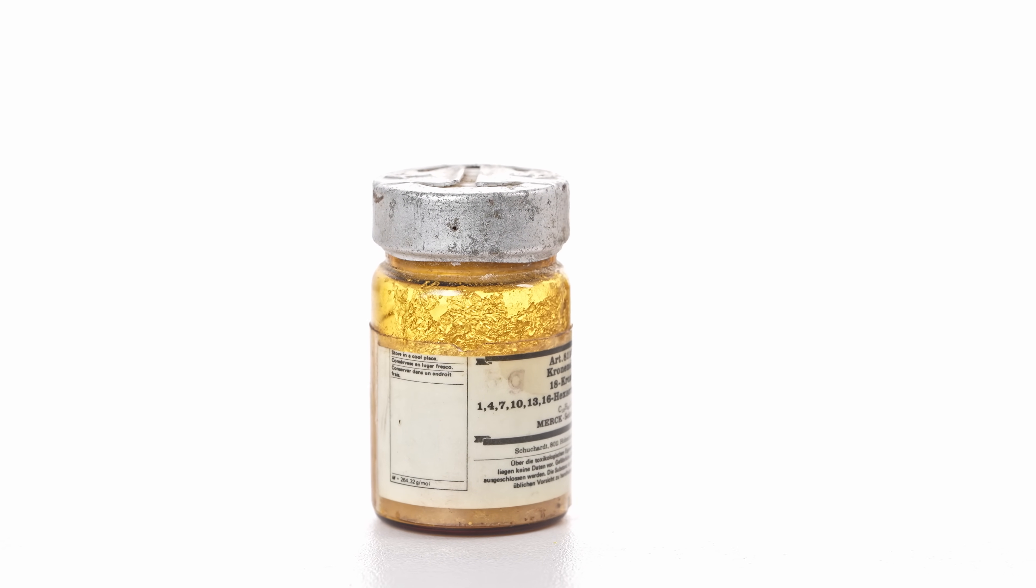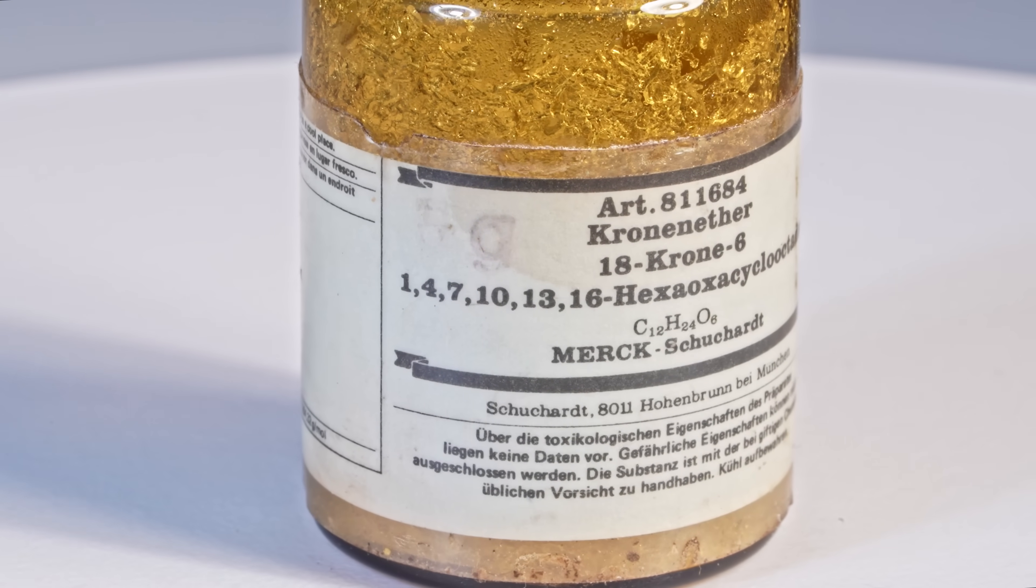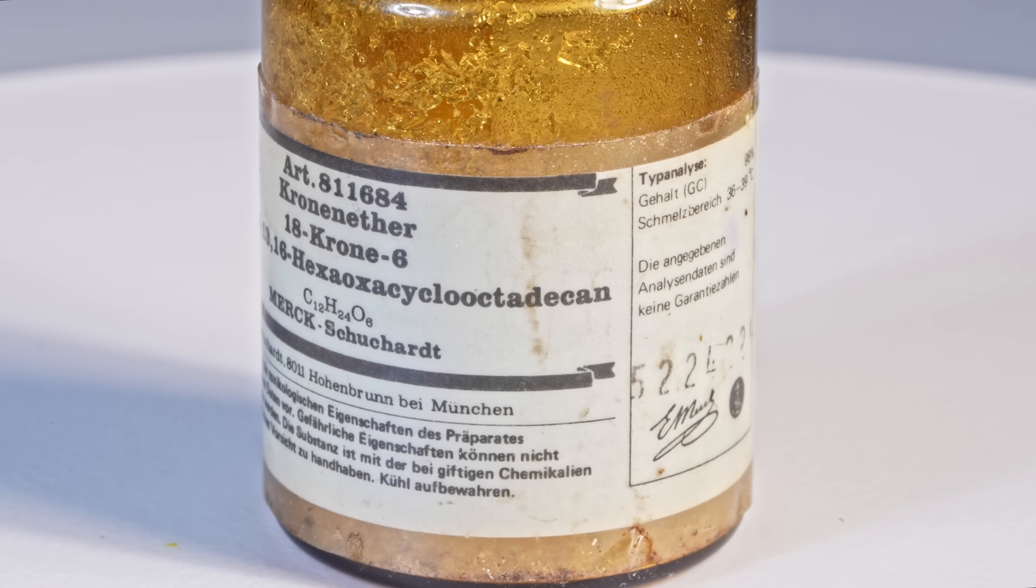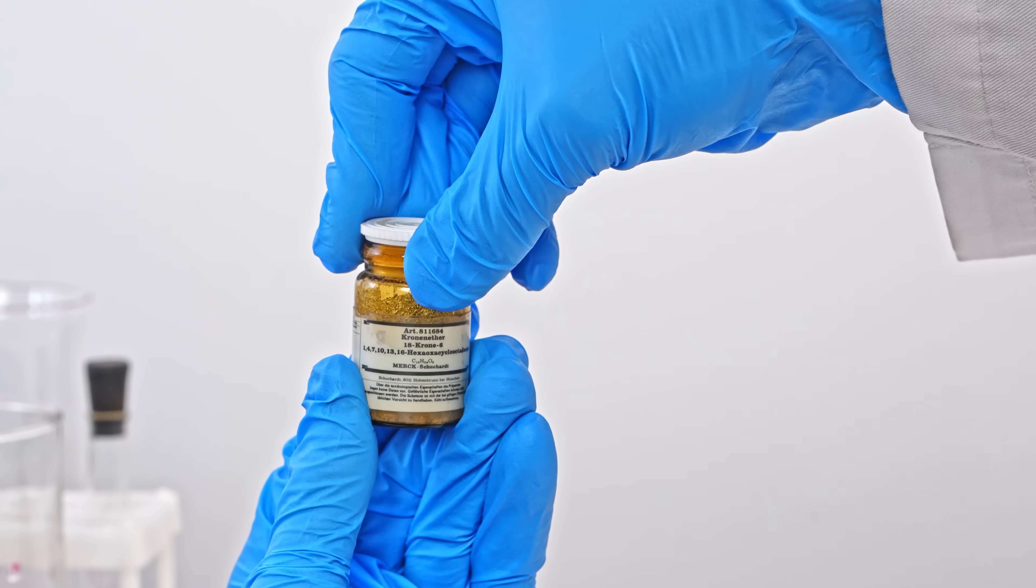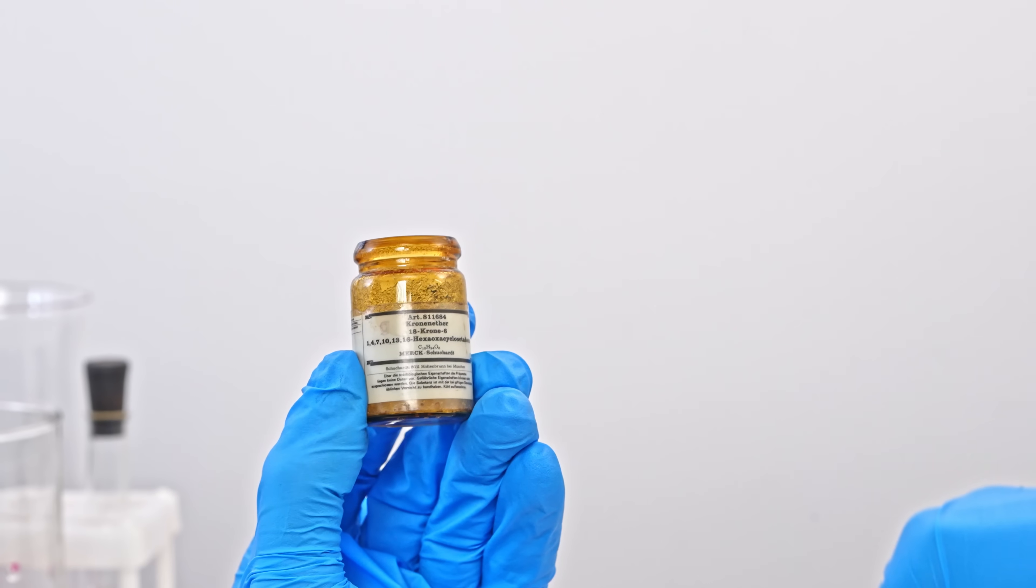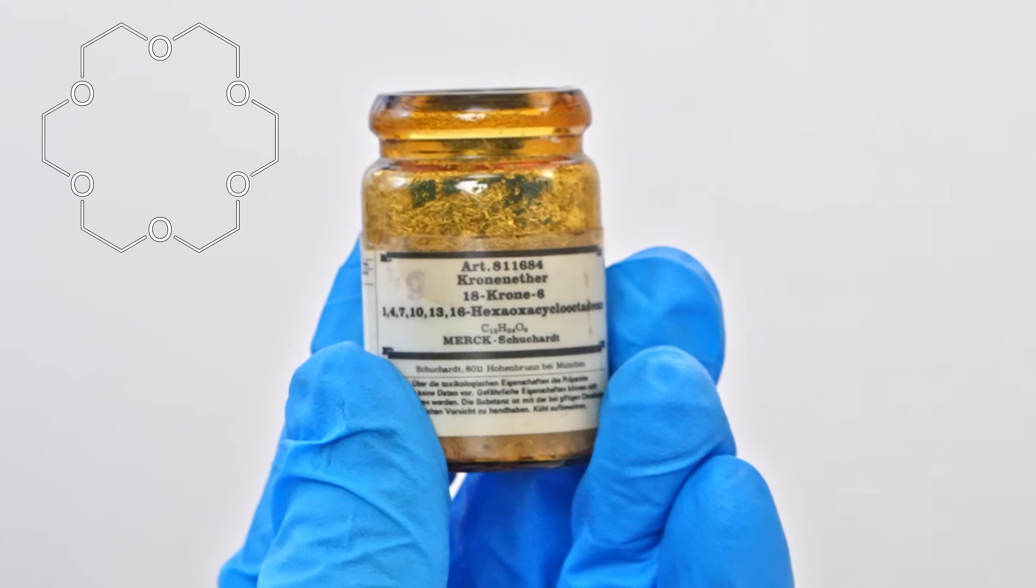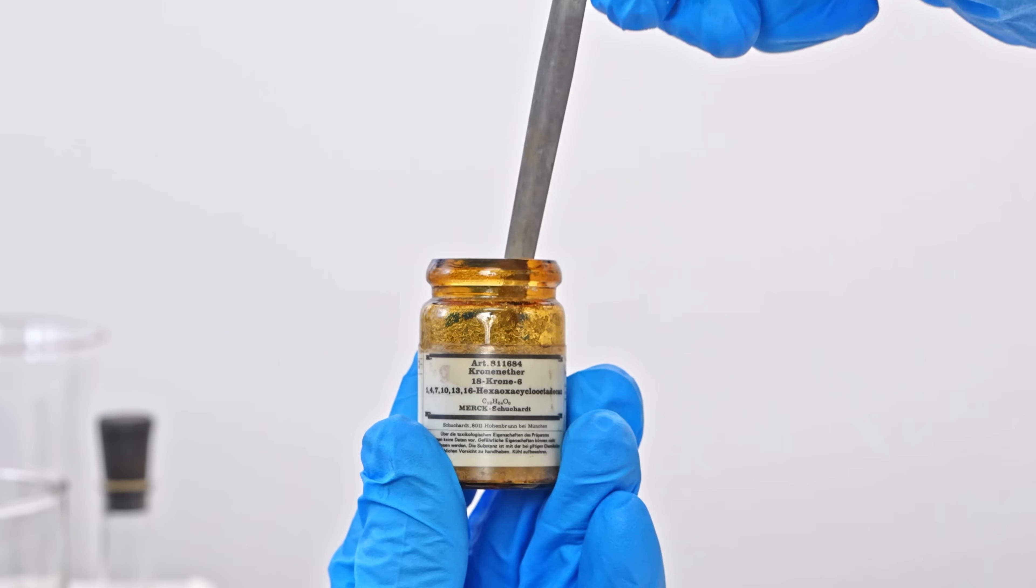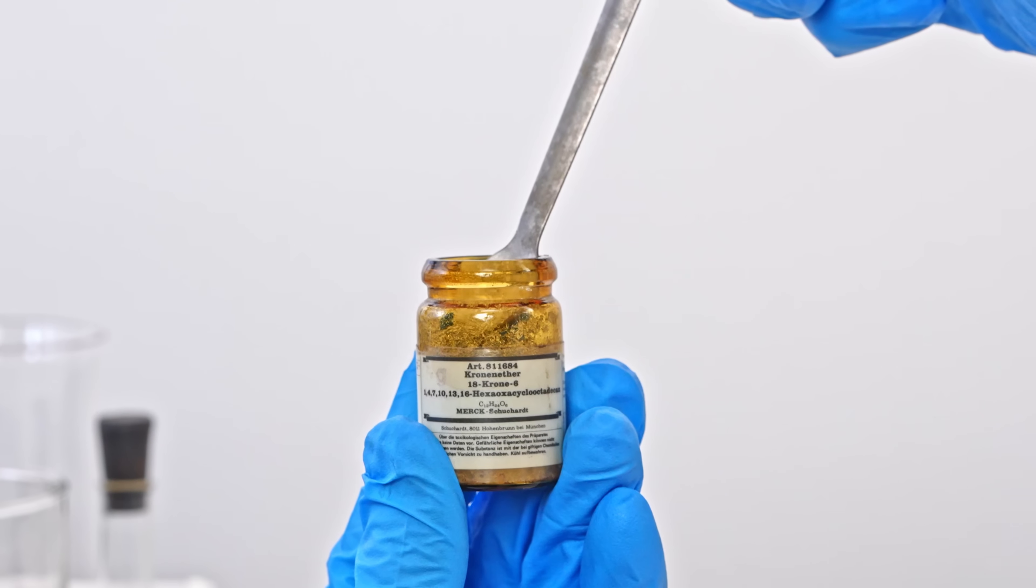However, we can make it dissolve in benzene using a special compound called 18-crown-6. This organic compound, which looks like transparent crystals, is a crown ether, a cyclic ether with six oxygen atoms arranged symmetrically.